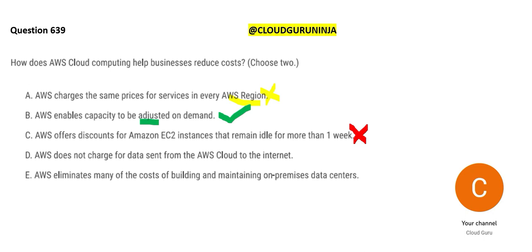Option D suggests that AWS does not charge for data sent from the AWS cloud to the internet. Anything that goes out of AWS is not free — whether it goes to the internet or to your on-premises environment. However, any data coming into AWS — inward movement — is free. AWS wants people to bring their data in, so they don't charge for ingress. They are not going to charge you for bringing data in and then also charge you for using it.